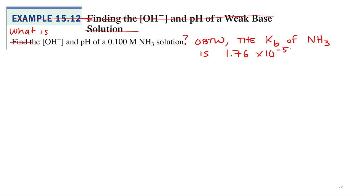What is the hydroxide and pH of this solution? I would say OBTW - oh, by the way - the KB of ammonia is 1.76 times 10 to the negative 5th. I'm very hip, I know the lingo.